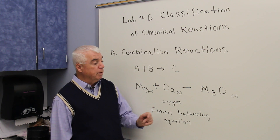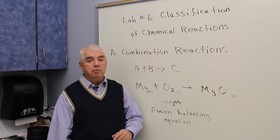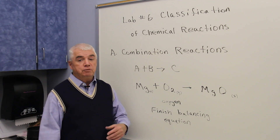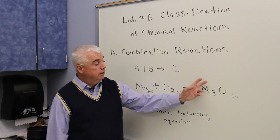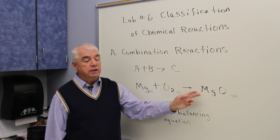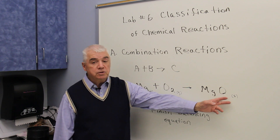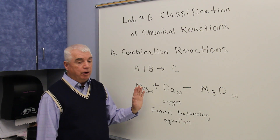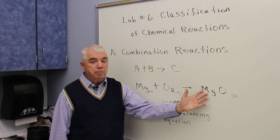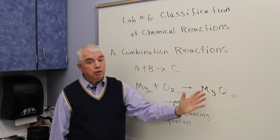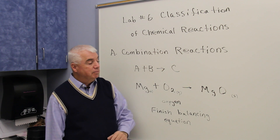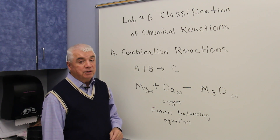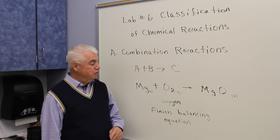If you look at the calculations and report part of this experiment, toward the end where it reviews each part and gives you tips and hints, it tells you that magnesium oxide is the product that's formed, and it's a solid. We've indicated the material that forms and we've got the correct formula for it — magnesium oxide. The third and last thing we want to do is to balance the equation.